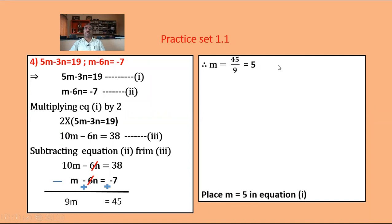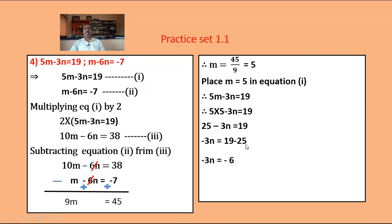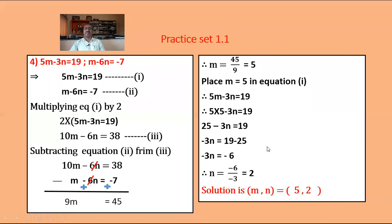Substitute m equals 5 in equation 1: 5m minus 3n equals 19. So 5 times 5 minus 3n equals 19, giving 25 minus 3n equals 19. Moving 25 to the RHS: minus 3n equals 19 minus 25 equals minus 6. Both sides have a negative sign, so dividing: n equals 6 upon 3 equals 2. Hence the solution is m equals 5 and n equals 2.